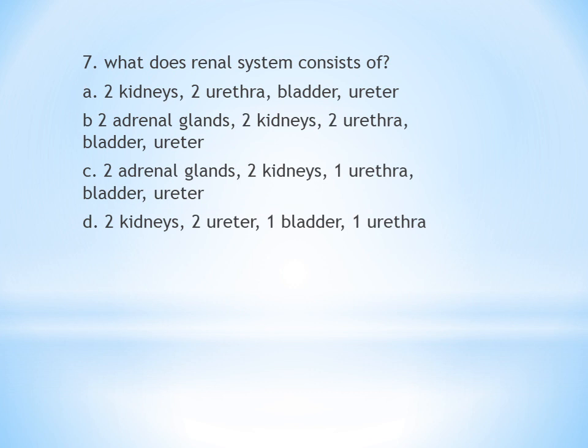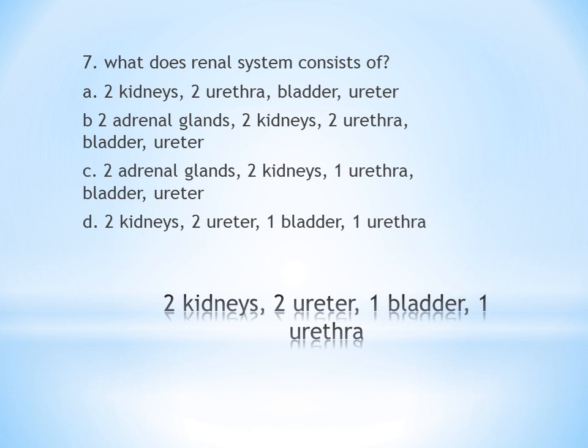Seventh question: What does the renal system consist of? A. Two kidneys, two ureters, bladder, urethra. B. Two adrenal glands, two kidneys, two ureters, bladder, urethra. C. Two adrenal glands, two kidneys, one urethra, bladder, ureter. D. Two kidneys, two ureters, one bladder, one urethra. Adrenal glands are not part of the renal system, so B and C can be eliminated. We have two ureters, so option D with two ureters is the answer. There is one urethra — a narrow tube. The answer is D.